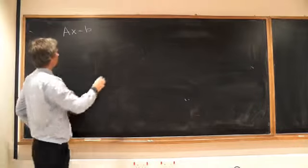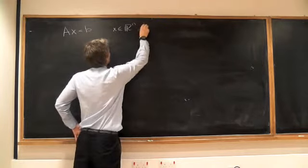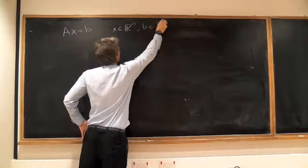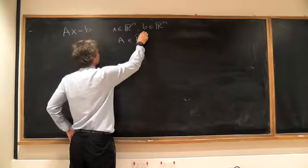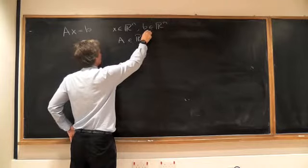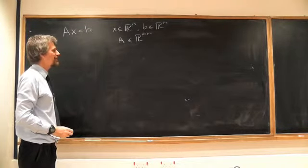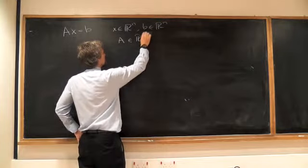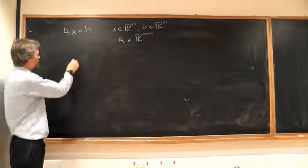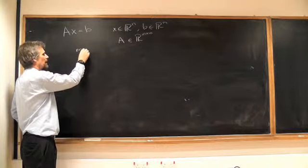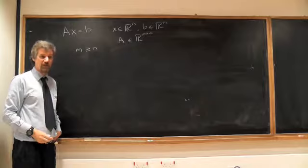In principle, EIT could be complex, but x is a vector in R^n, and b is a vector in R^m, and so A is - we're interested in the case m being bigger than or equal to n. Maybe even strictly bigger, because we want to be overdetermined. More equations than variables.